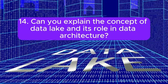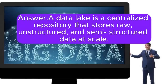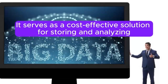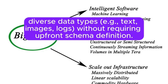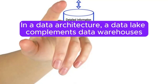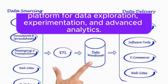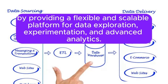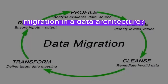Question 14: Can you explain the concept of a Data Lake and its role in data architecture? A data lake is a centralized repository that stores raw, unstructured, and semi-structured data at scale. It serves as a cost-effective solution for storing and analyzing diverse data types such as text, images, and logs, without requiring upfront schema definition. In a data architecture, a data lake complements data warehouses by providing a flexible and scalable platform for data exploration, experimentation, and advanced analytics.